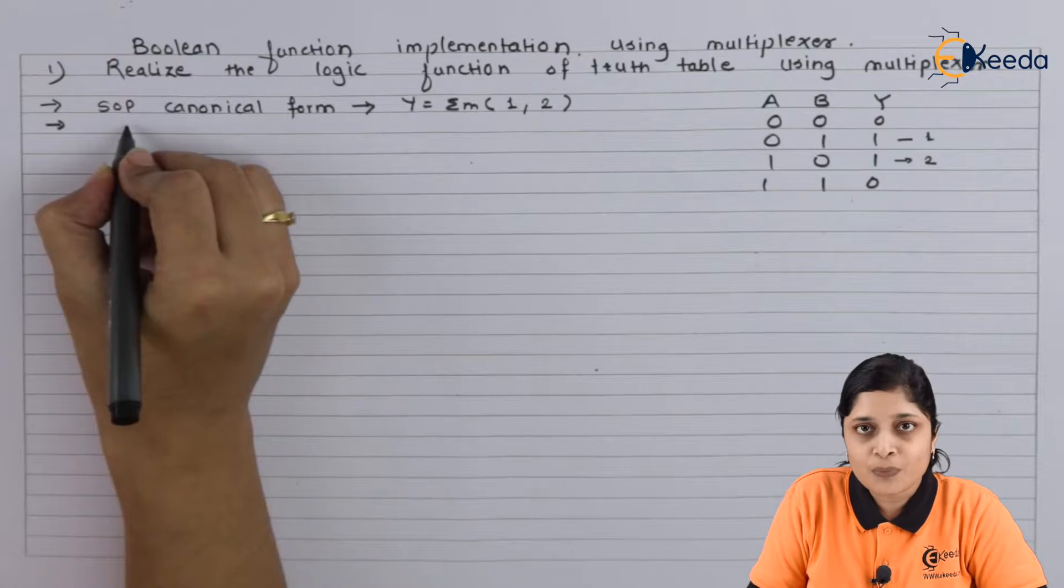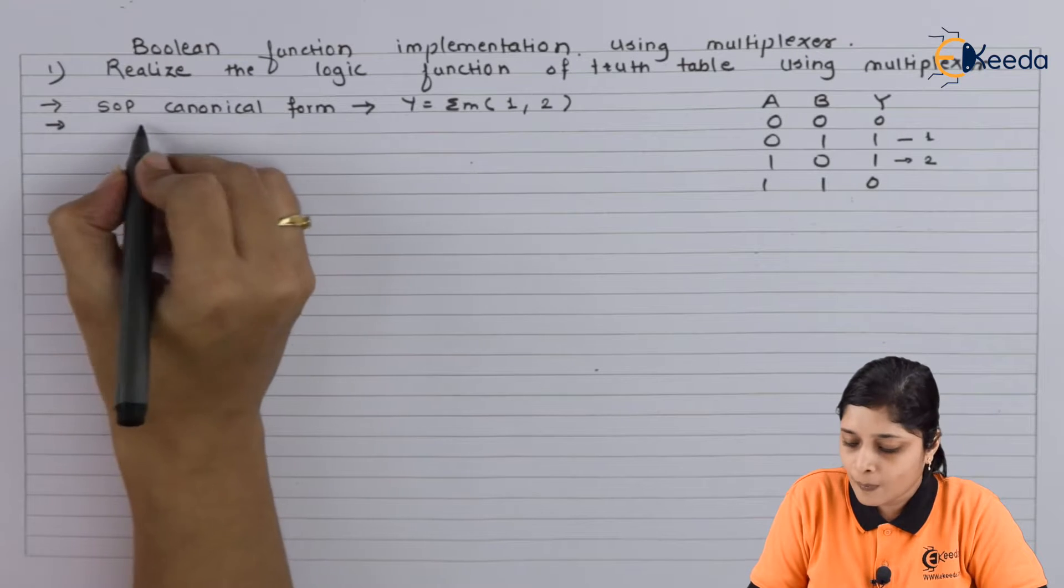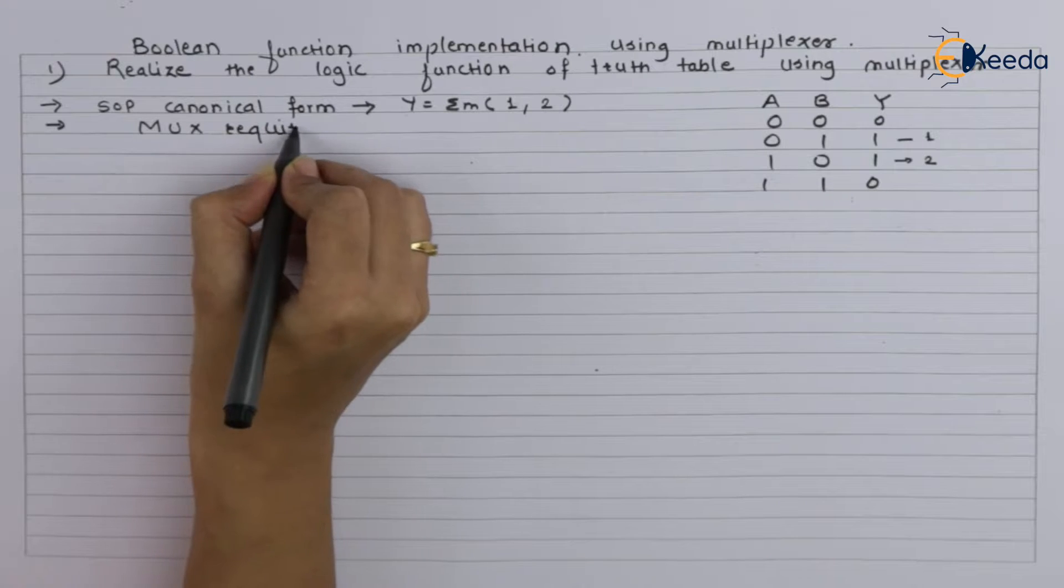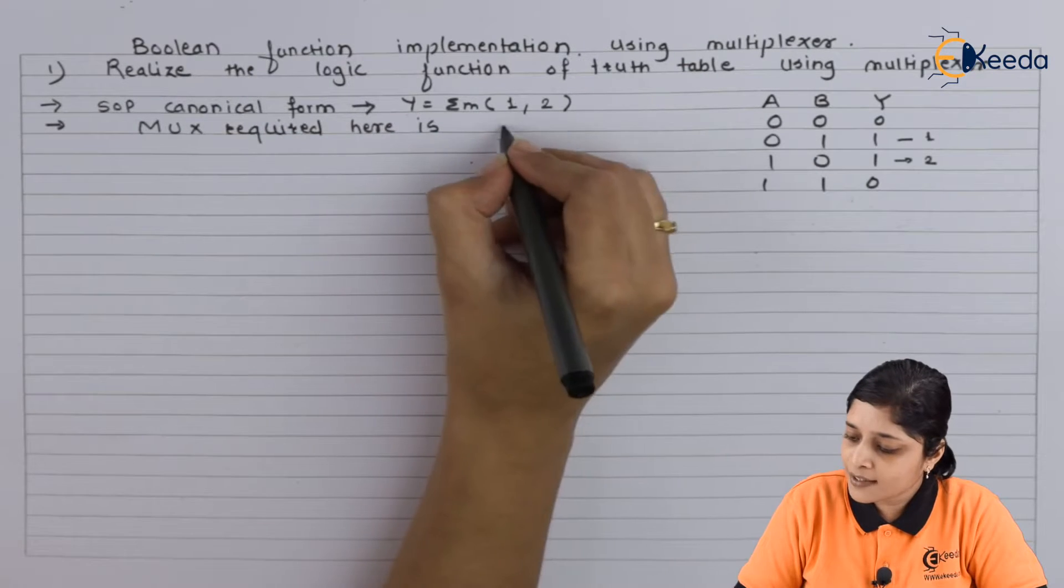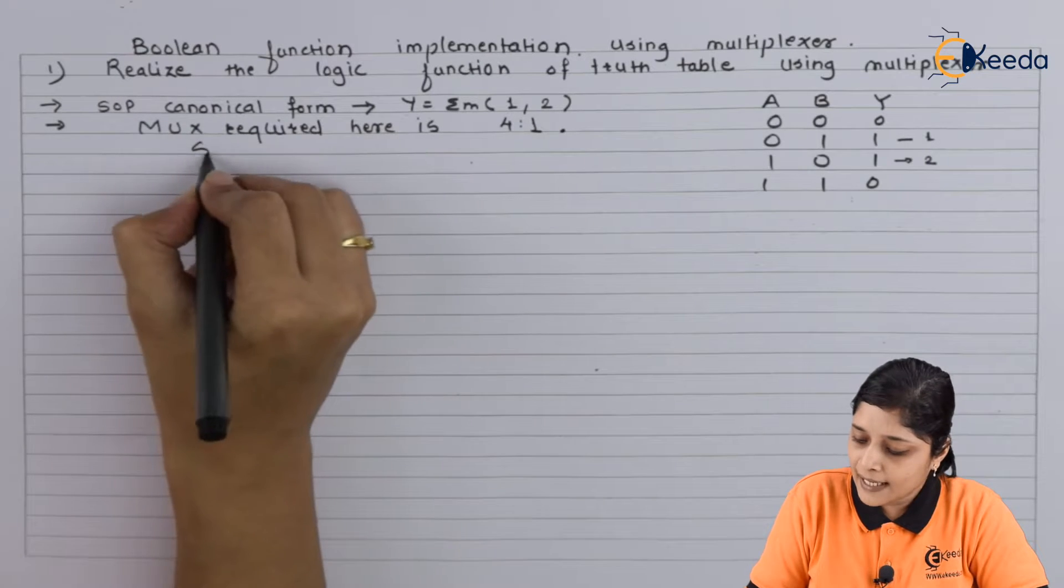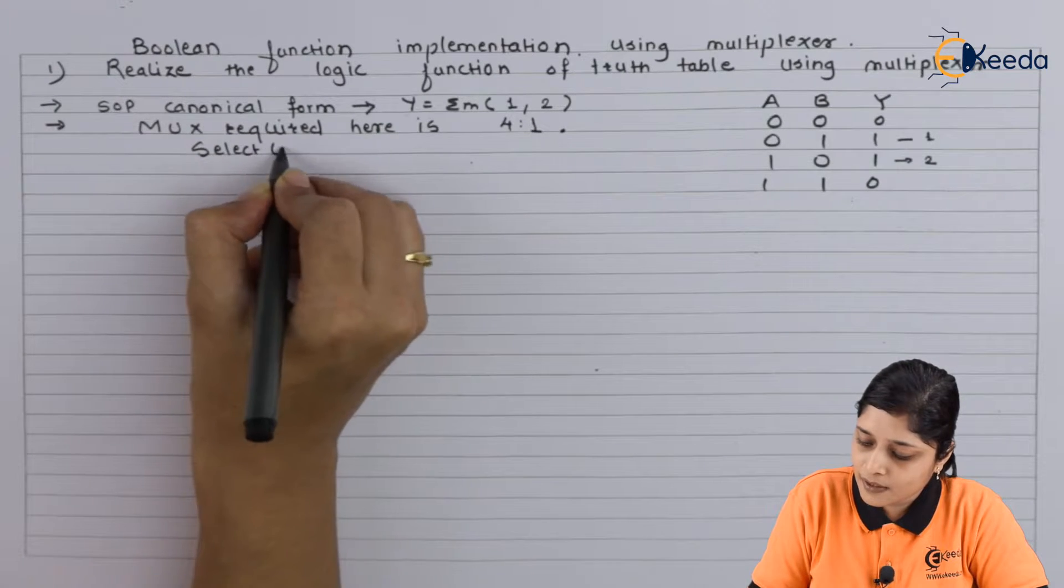Now you have to obtain which mux we have to use. The mux required here is four is to one mux, and select lines required are two. A and B are variables, s0 and s1 are the select lines you have to use.